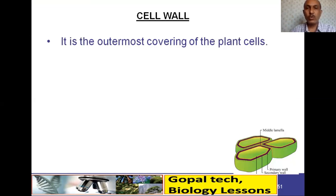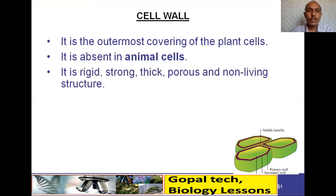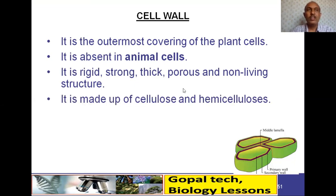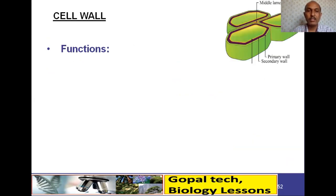Now coming to the second part — the cell wall. After the plasma membrane, it is the outermost covering of plant cells. It is absent in animal cells. It is a rigid, strong, thick, porous, and non-living structure. It is chemically made up of cellulose and hemicellulose, and is also found in plants, algae, fungi, and most bacteria.